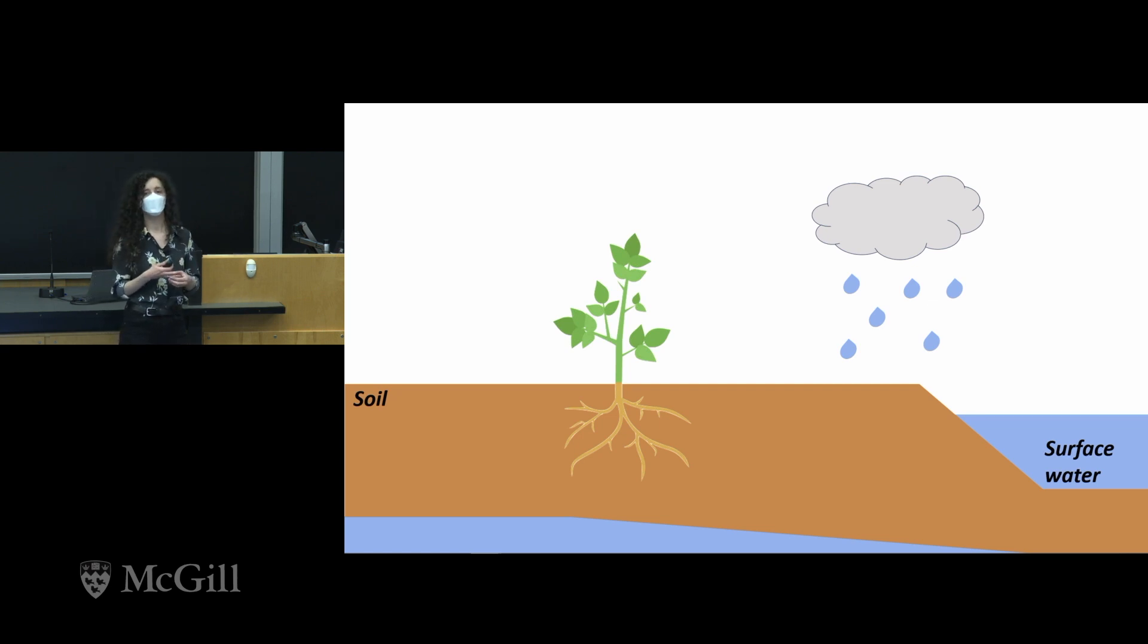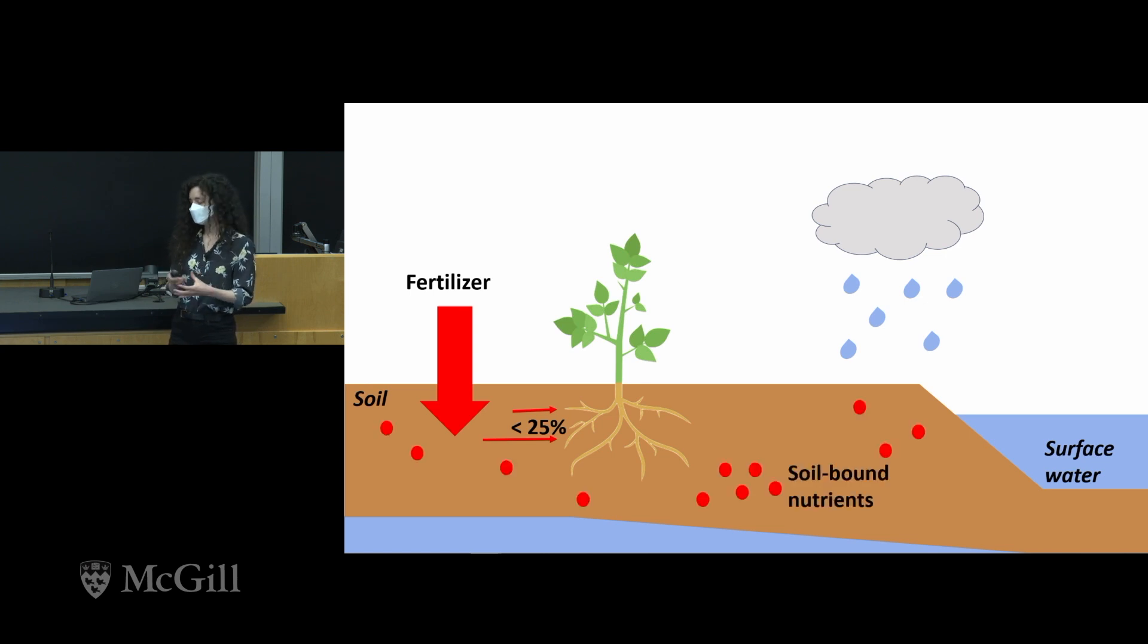In order to meet future world food demands, we need to change the way that we farm, primarily the way that we use fertilizers. Right now, our fertilizers are very inefficient. We use huge amounts applied to the soil because only less than 25% is actually taken up by plants. The rest ends up polluting the environment, sitting in the soil where it leads to greenhouse gas emissions and pollutes groundwater and surface water sources.